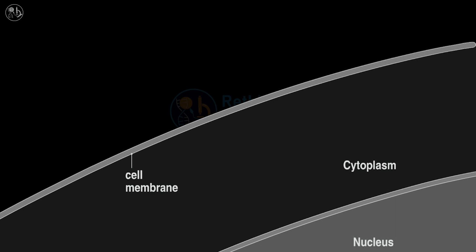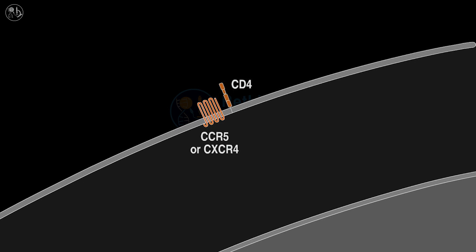HIV invades cells through specific surface molecules. CD4 is the main receptor for the virus, while the chemokine receptors CCR5 and CXCR4 act as secondary gateways.